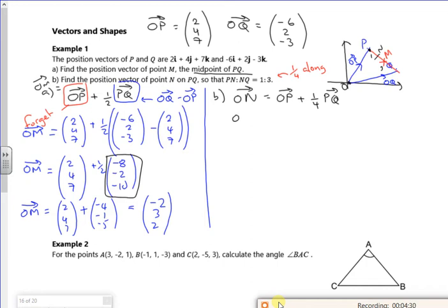Now I know that PQ is (-8, -2, -10). Right. So ON is OP which is (2, 4, 7) plus a quarter of PQ. So that bit there was PQ because I did Q minus P. So that's going to be (-8, -2, -10). ON. So what have I got then? So I've got 2 plus a quarter times -8, so that's 2 minus 2 is 0. I've got 4 plus a quarter times -2, so that's going to be 3 and a half, 7 over 2. And then I've got 7 plus a quarter of -10, so minus 10 over 4 minus 5 over 2 minus 2 and a half. 7 minus 2 and a half is 4 and a half, so that's going to be 9 over 2.